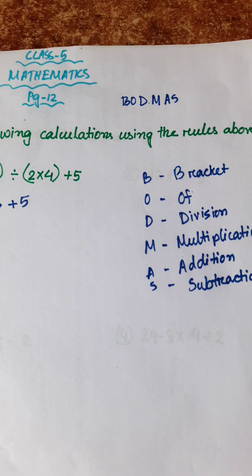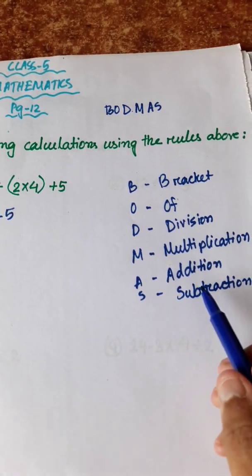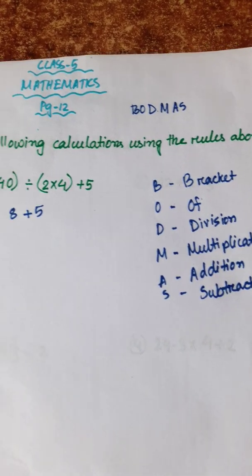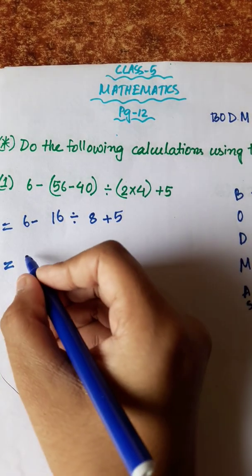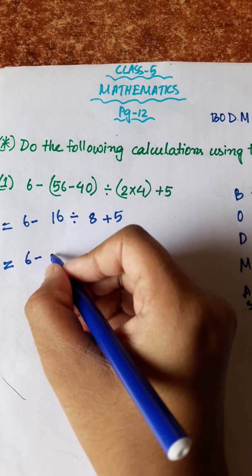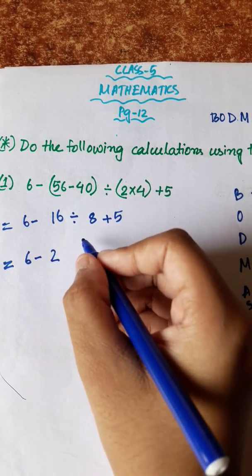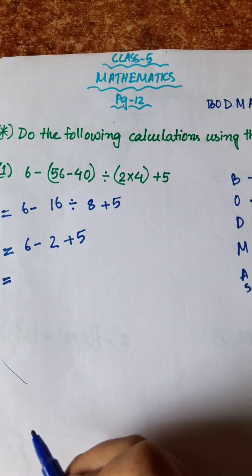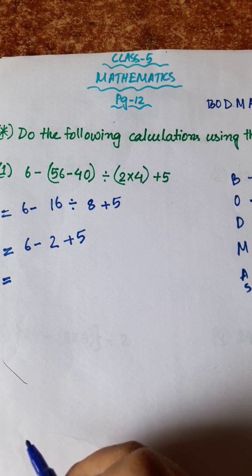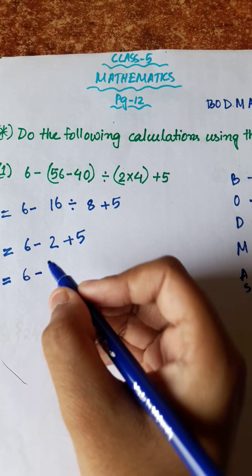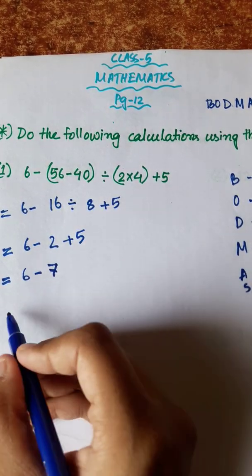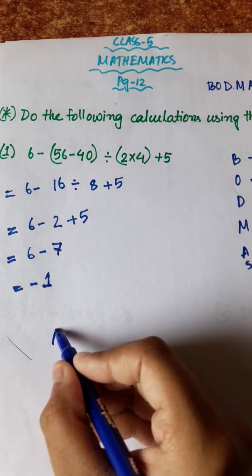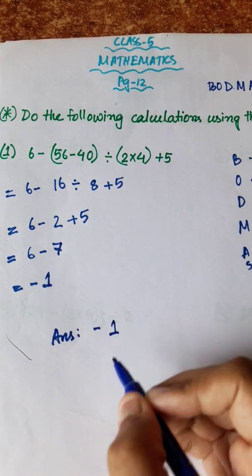We have brackets done, so now we follow: division first. 16 divided by 8 is 2. Then plus 5. That gives us 2 plus 5 equals 7. Then 7 minus 1. The answer is 6. Good — BODMAS rule followed.